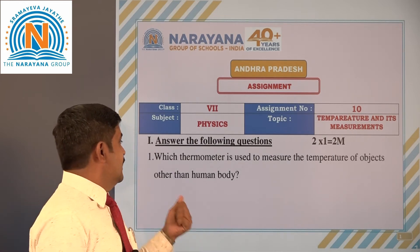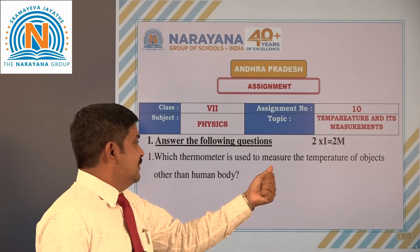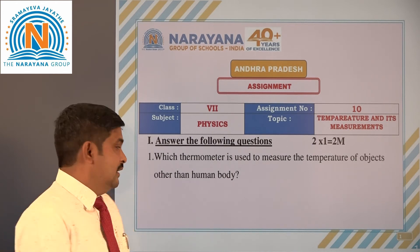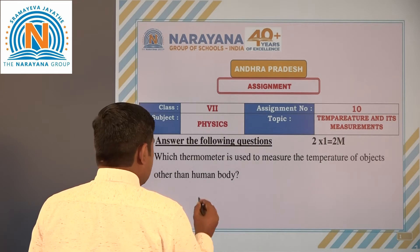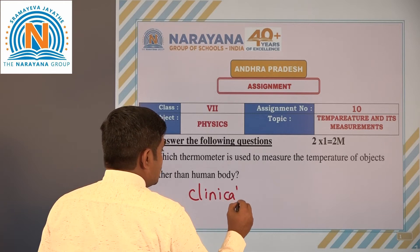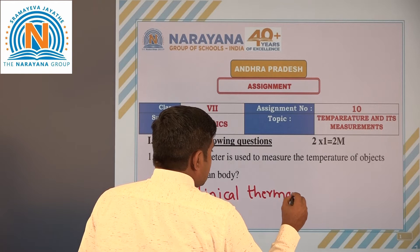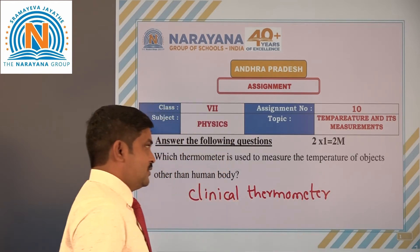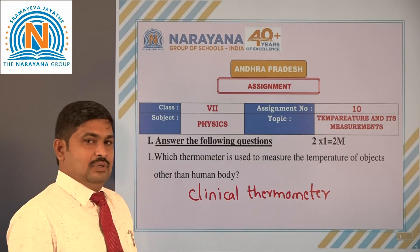The first question is: which thermometer is used to measure the temperature of objects other than human bodies? The answer is the clinical thermometer. The clinical thermometer can be used to measure the temperature of objects other than the human body.